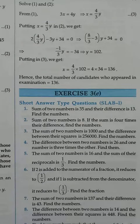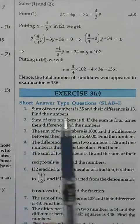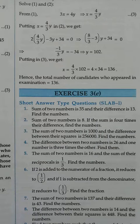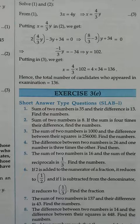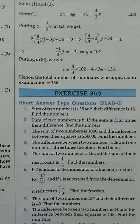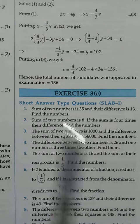Today we'll continue with Chapter 3: linear pair of linear equations in two variables. Here we have word problems or story problems. First we read the question, then try to see what we want. What we don't know, we assume as x and y. Then we translate them into the form of a linear equation and solve them by methods like substitution, elimination, or cross multiplication — whichever you prefer.